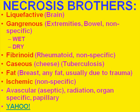Necrosis is defined as cell or tissue death and its appearance. There are classically many adjectives for necrosis — some are logical, some you simply have to remember. The most common types include liquefactive necrosis, gangrenous necrosis, fibrinoid, caseous, fat, ischemic, and aseptic necrosis. You can look these up to see which adjectives most commonly precede the word necrosis.